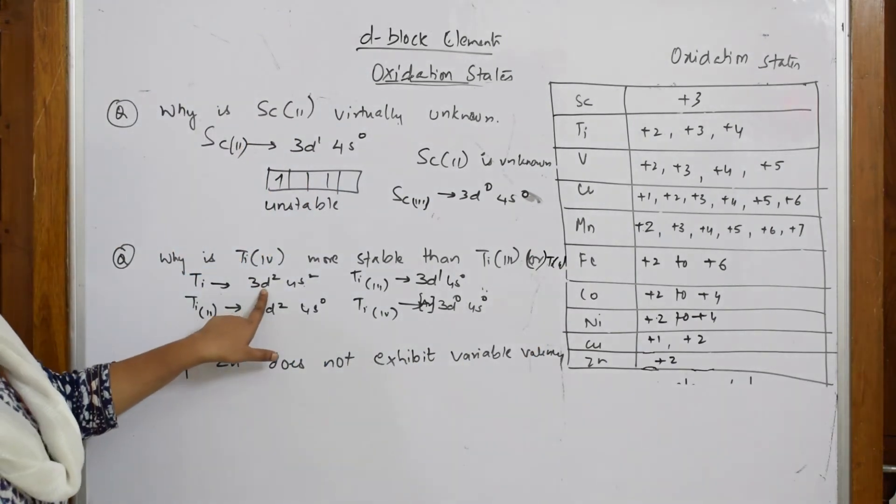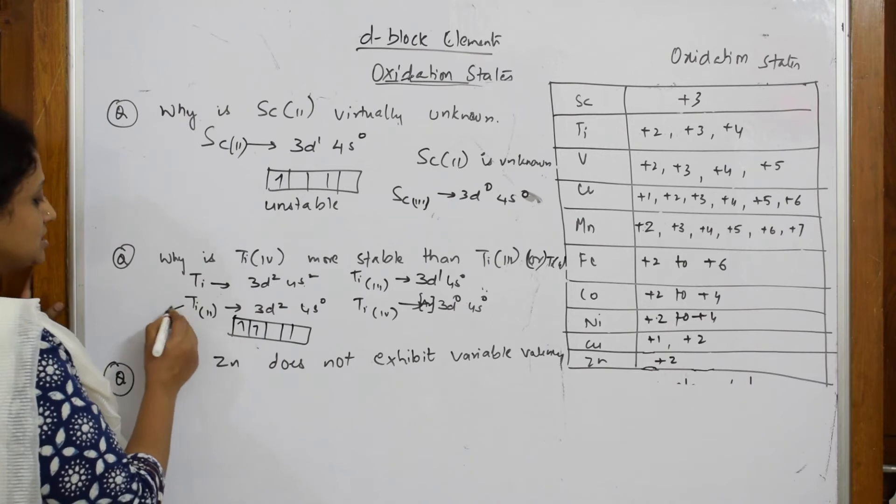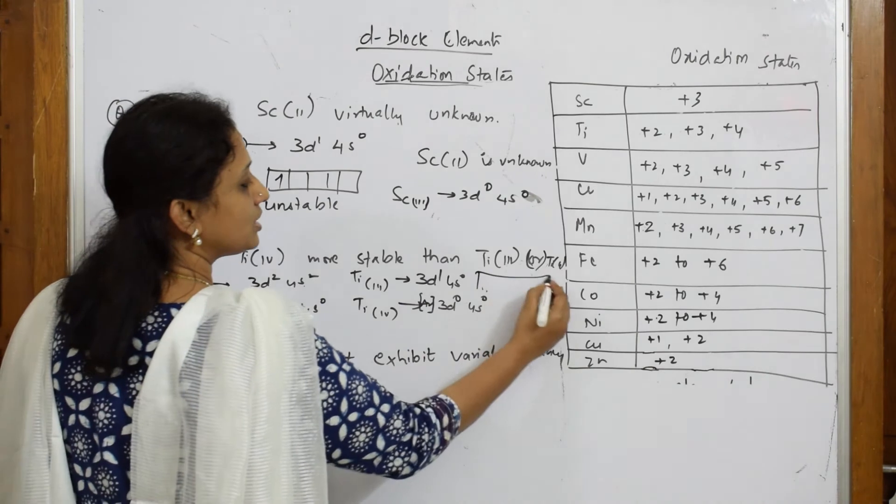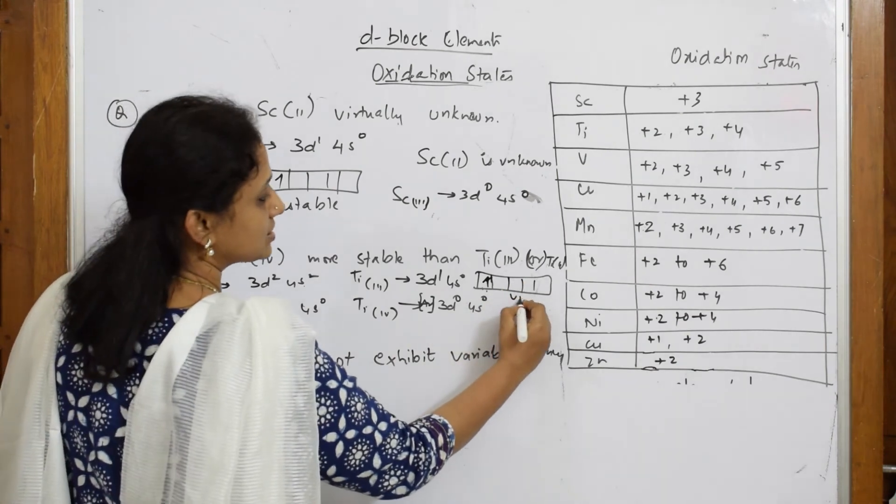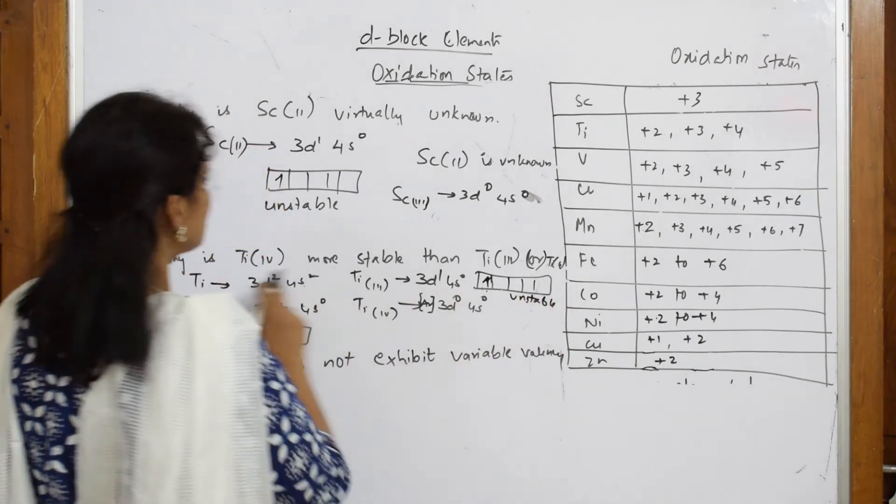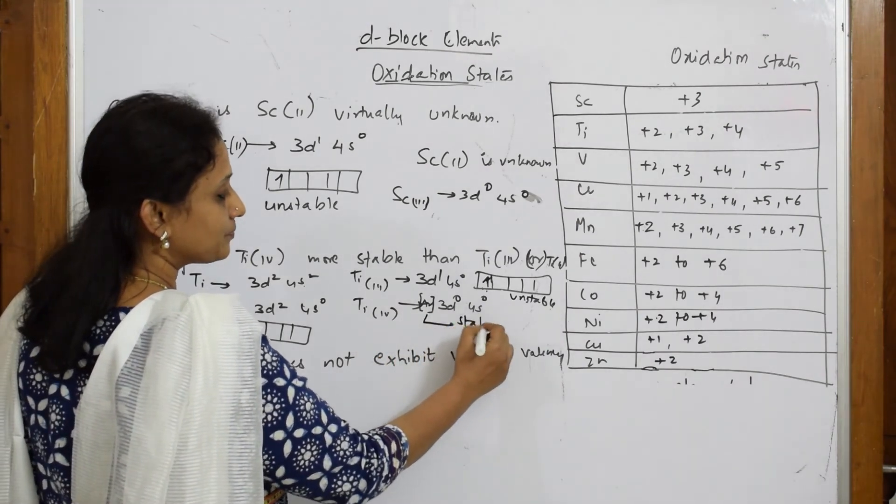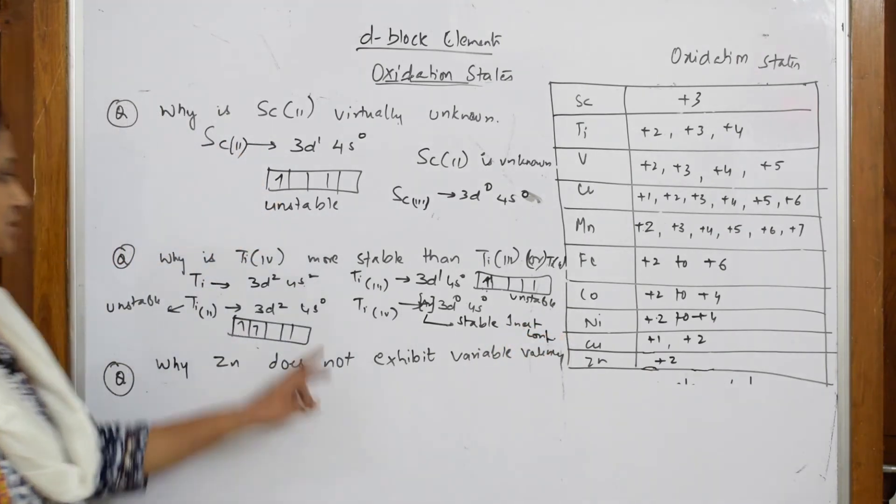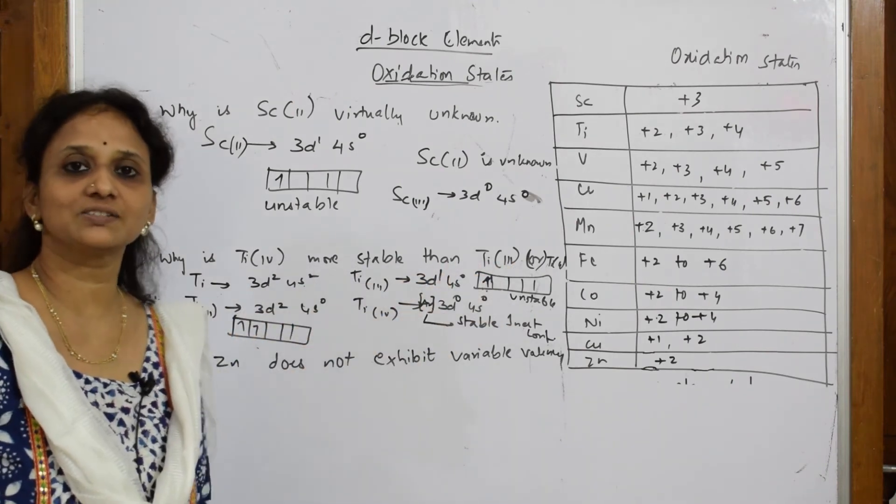Now let's see what you're observing. This is the original configuration Ti2+. Both have unpaired electrons, unstable. So this is unstable. When I check Ti3+, there is only presence of one half-filled electron, so this is also unstable. But when it comes to Ti4+, after removing four electrons, what is it getting? It's getting stable inert gas configuration. That is the reason Ti4+ is more stable than Ti3+ and Ti2+.